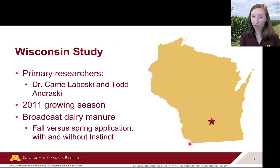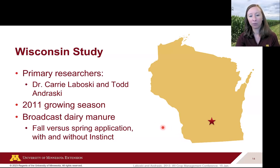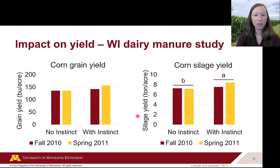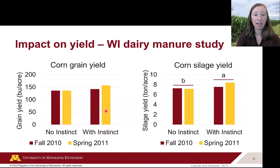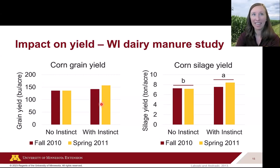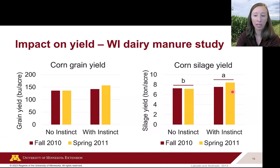Wisconsin researchers Dr. Carrie Laboski and Tom Andraski did a preliminary test in 2011, broadcasting dairy manure at one site and looking at with and without Instinct, and fall versus spring application. For corn grain yield, there was no statistical difference between treatments, though there was high field variability. For corn silage yield, they did find a statistical difference: with Instinct, regardless of whether applied in fall or spring, silage yield was increased.